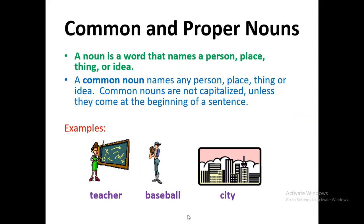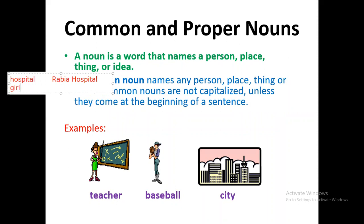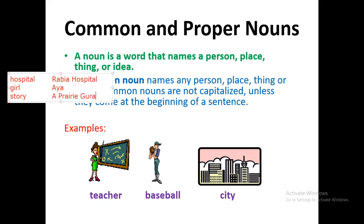Let's take some examples to understand. If we say 'hospital' without saying which hospital, this is a common noun. But the proper noun is when we say, for example, 'Rabia Hospital' — it has a name, so this is a proper noun. If we say 'girl' without saying her name, this is a common noun. But if we say a specific name, that will be a proper noun. If we say 'story' without saying its name, it's a common noun. But if we say 'Prairie Guard Dog' — our story this week — that is a proper noun.